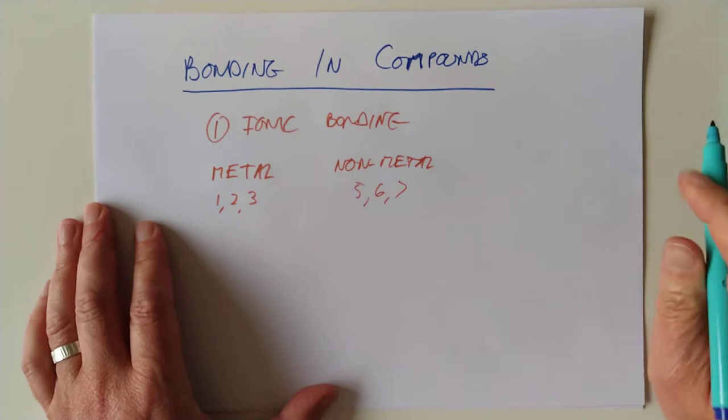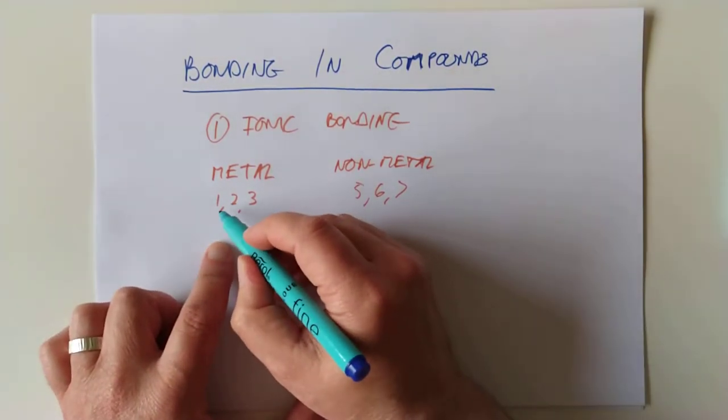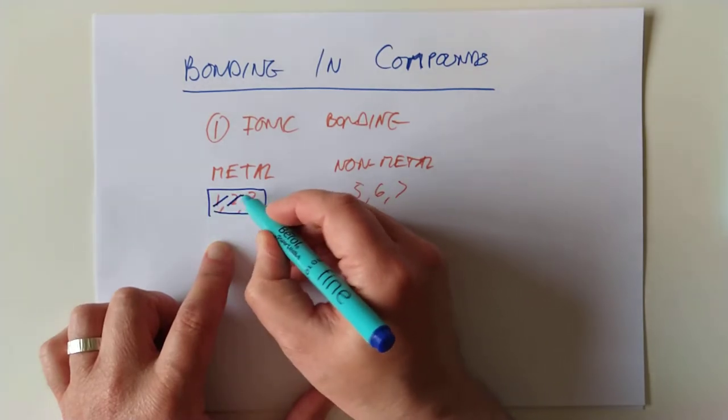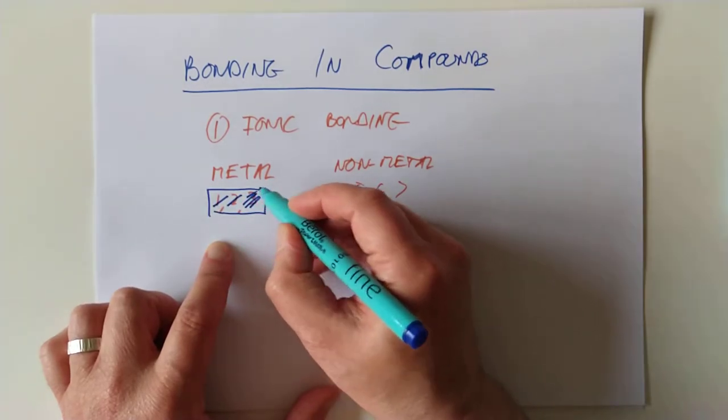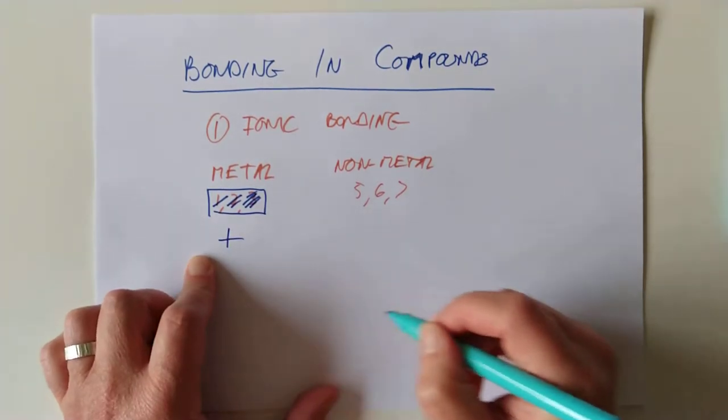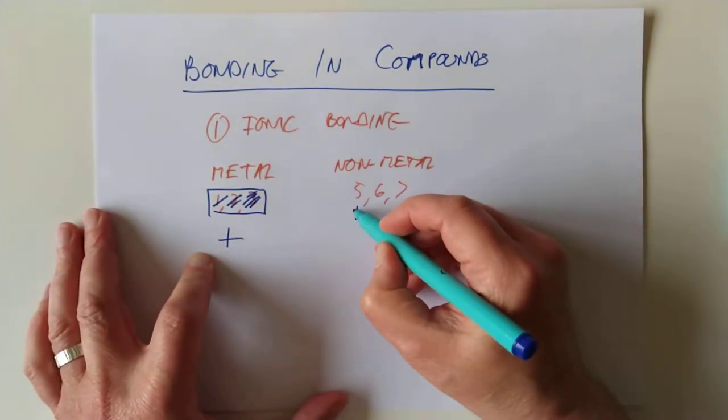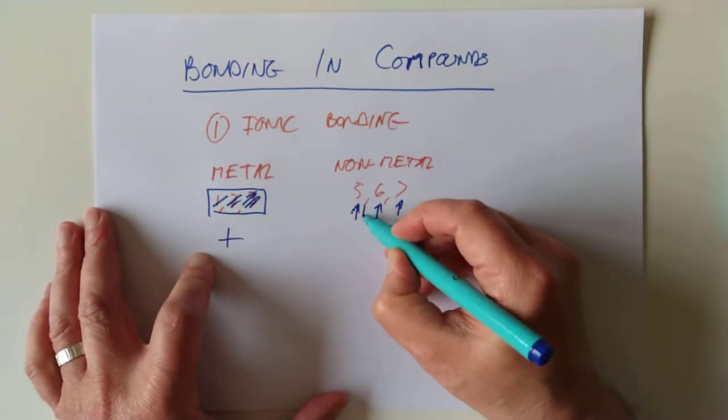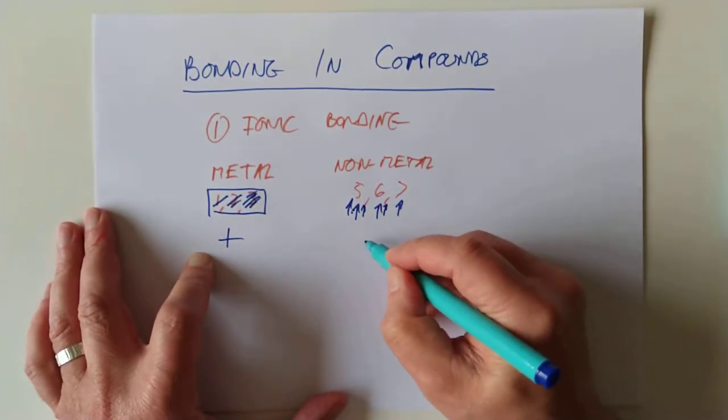I don't know if you've actually realized this before, but that means that metals, that's the reason why metals form positive ions. They will lose one, or lose two, or lose all three of the outer electrons, and they create positive ions. Non-metals will either gain three, or two, or one electron, respectively, which means they create negative ions.